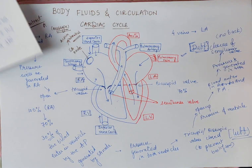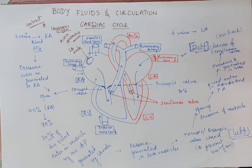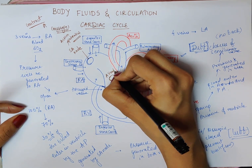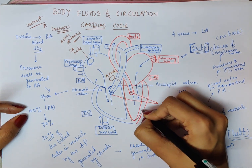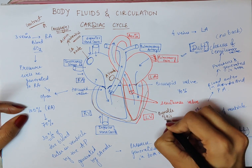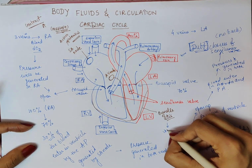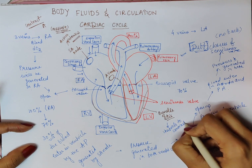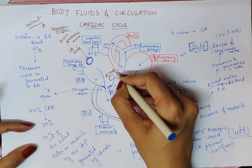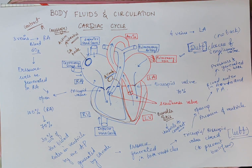One more thing: during ventricular contraction, the ventricles also receive a message. This message is given by the AV node and the bundle of His. These two structures give the message to the ventricles to contract and undergo systole. Just as the SA node sends a message to the atria to contract, the AV node sends the message to the ventricles to contract so blood can enter the aorta and pulmonary artery.